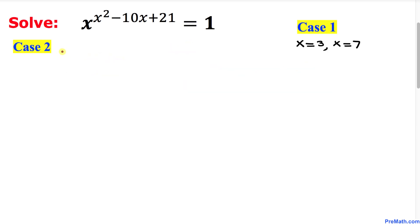And now let's consider case 2 and in this case we are going to assume that this base must be equal to 1 because 1 power anything equals to 1 and we know that our base is simply x. So therefore our x value is going to be simply 1 and that's our solution.